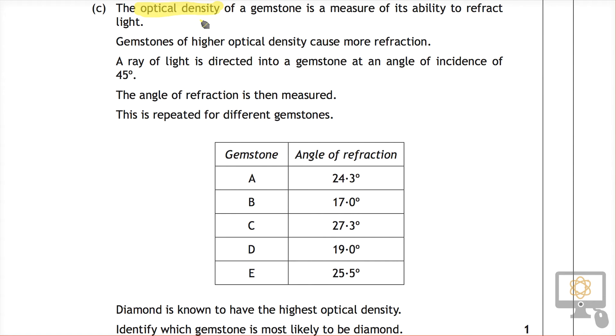Gemstones of higher optical density cause more refraction, or another way of saying that is that they cause the light to slow down greater. A ray of light is directed into a gemstone with an angle of incidence of 45 degrees and the angle of refraction is then measured.